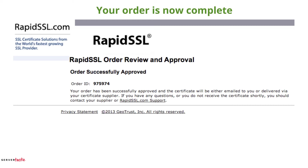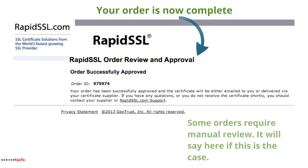Your order is now complete. Some orders do require a manual review — it will say so here if this is the case. If your order has been flagged for manual review this will normally take up to around 24 hours. If it is taking longer than that then you are welcome to contact us and we will see if we can expedite the check.